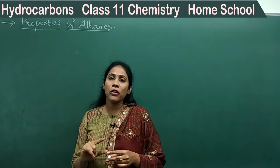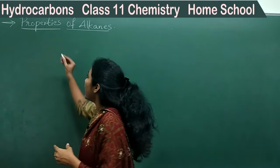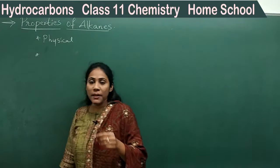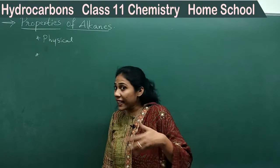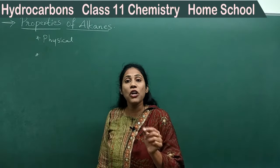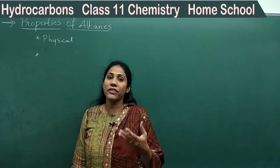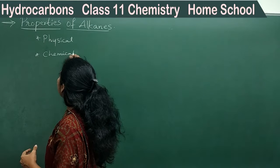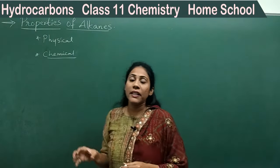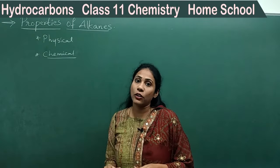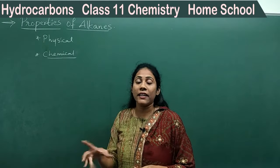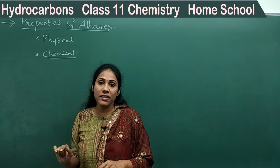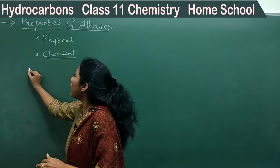When you talk about the properties of organic compounds, there are two types. One is physical properties — that covers boiling point, melting point, how they exist in nature, and solubility. The second is chemical properties, which is very important for competitive exams. Under chemical properties, we discuss all the possible reactions that alkanes undergo — what they react with, how they react, and what new organic compounds can be formed.